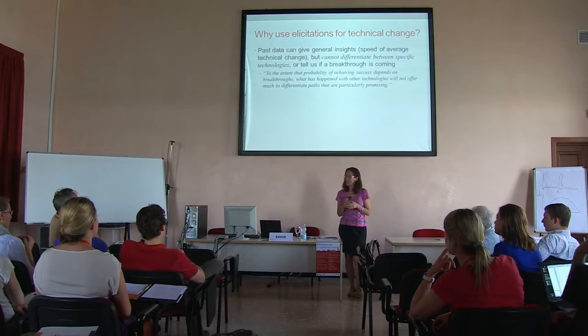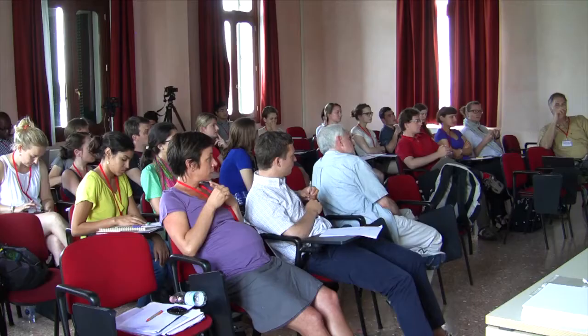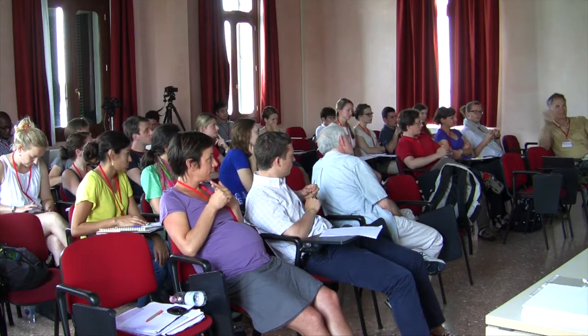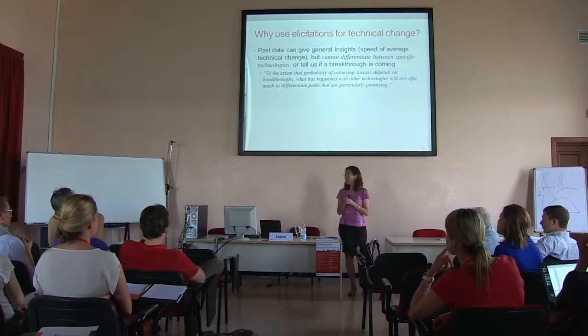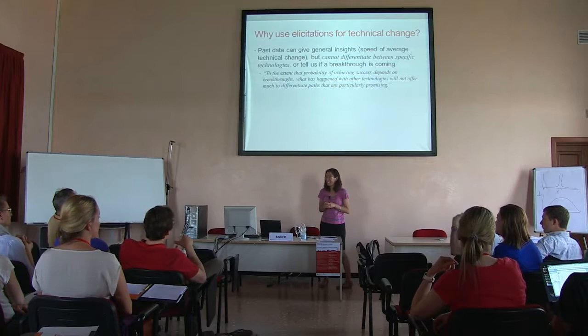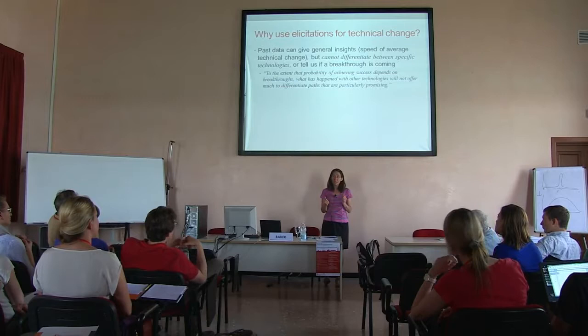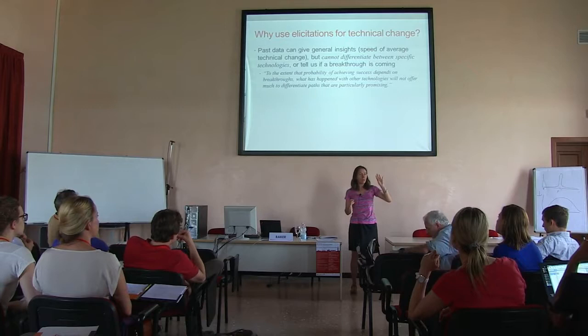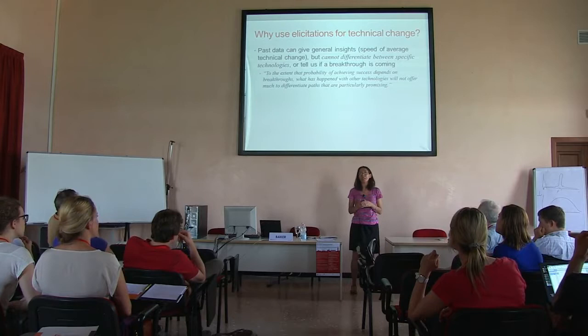The point is that some things you really kind of need elicitations for; other things are more arguable and you could probably get some data for them. Bill Nordhaus is doing a study and originally wanted to do elicitations on all three pieces of information he wanted, but we suggested if you don't have to, don't do an elicitation. So he's cut it back — for population in the future, he's just going to use NASA's projections, and for climate sensitivity, he decided to look at a bunch of different estimates and combine those rather than doing an elicitation.